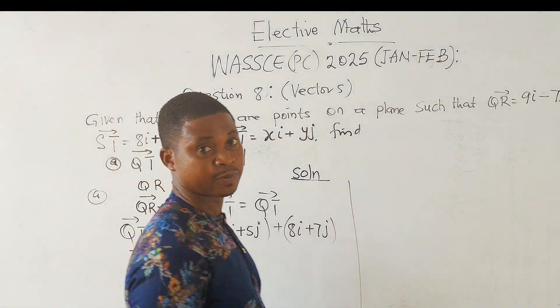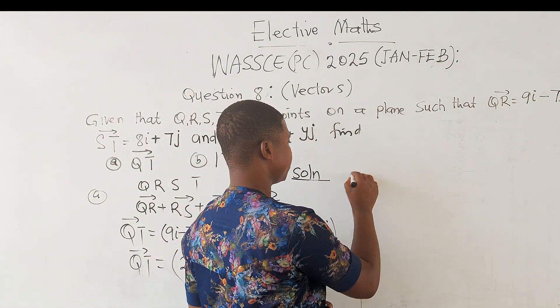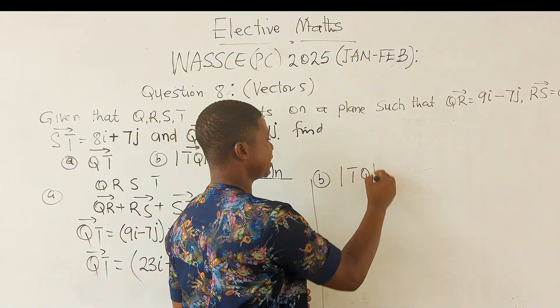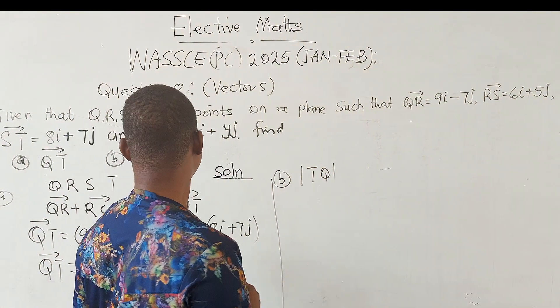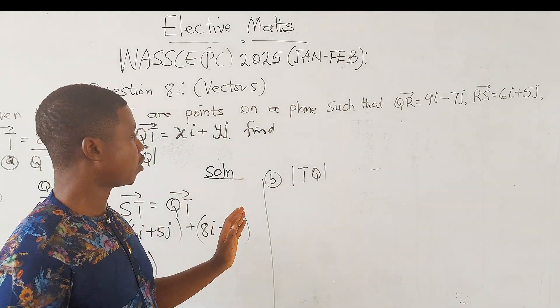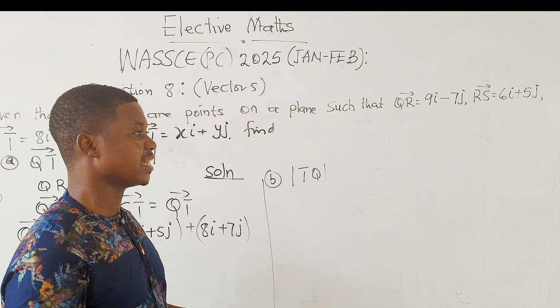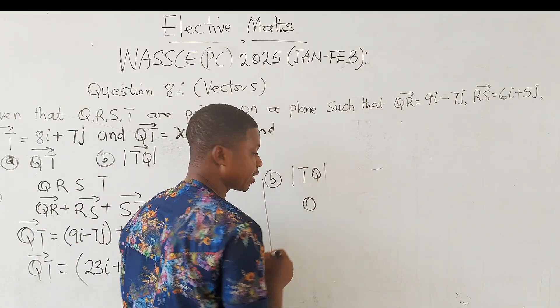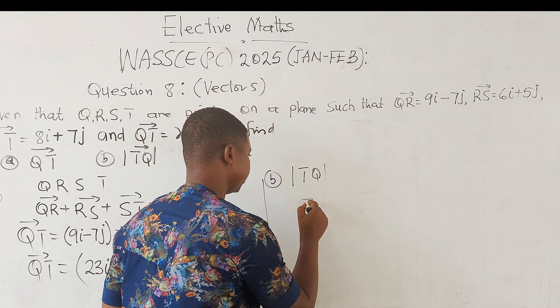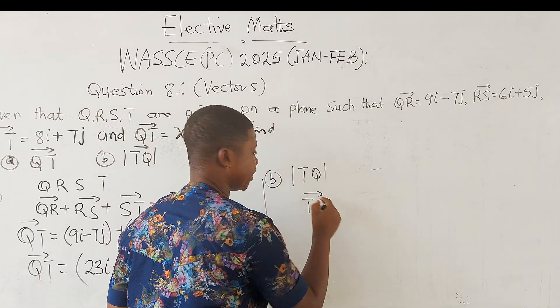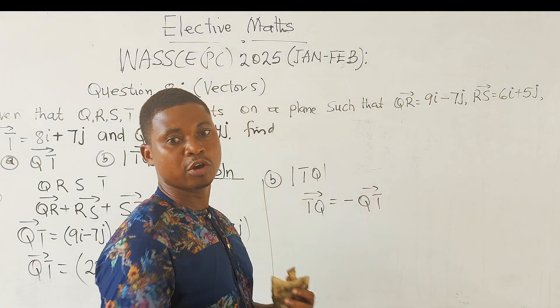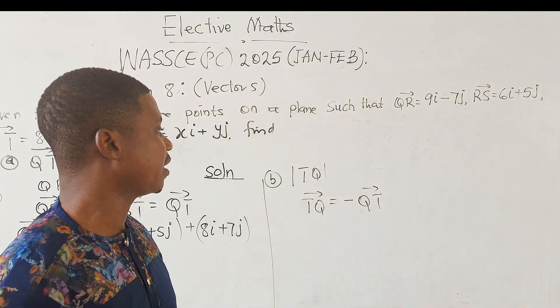Now let's move to the second aspect of the question, which is B. In B, we are asked to find the magnitude of TQ. But from the question, we have QT, not TQ. But from vectors, vector TQ is equal to negative QT, because it is the opposite direction.